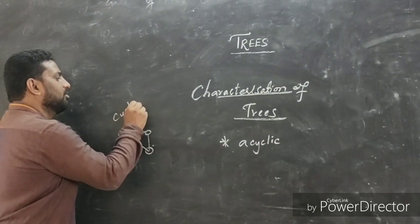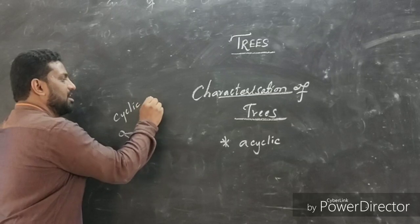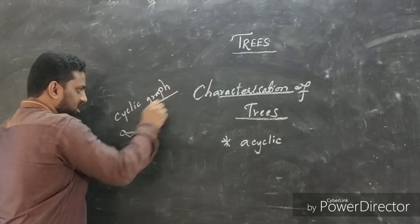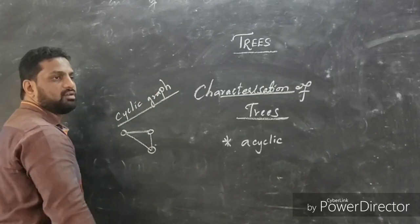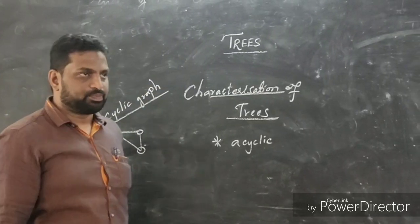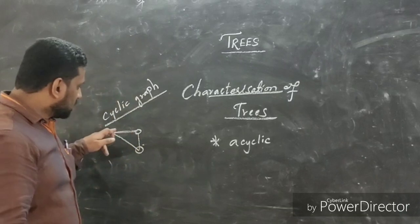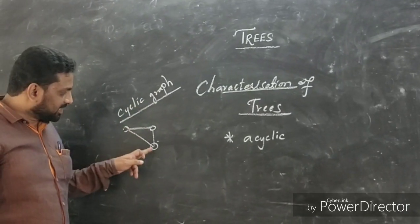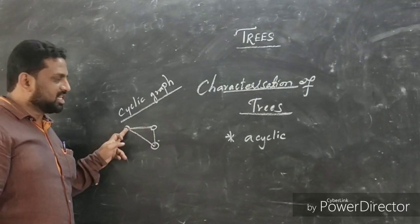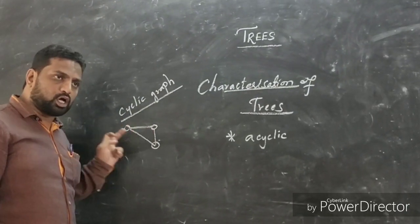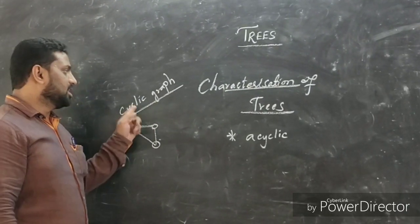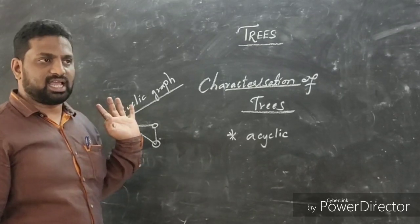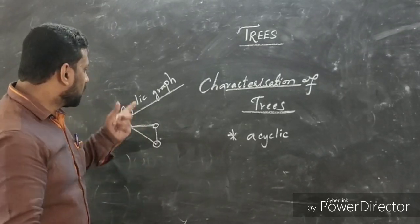This is an example of a cyclic graph. As we have seen, the definition of a cyclic graph: if the starting point and the terminus point are both similar, then it is called a cyclic graph.